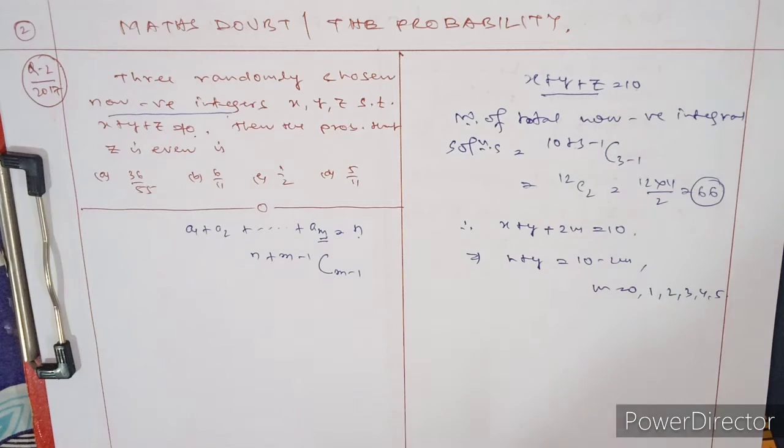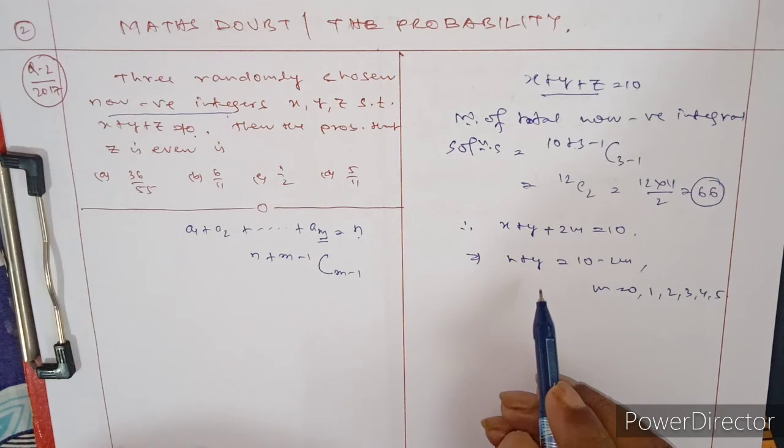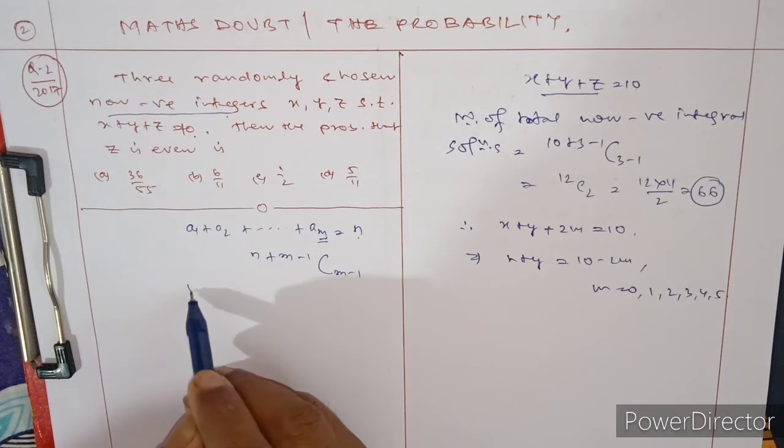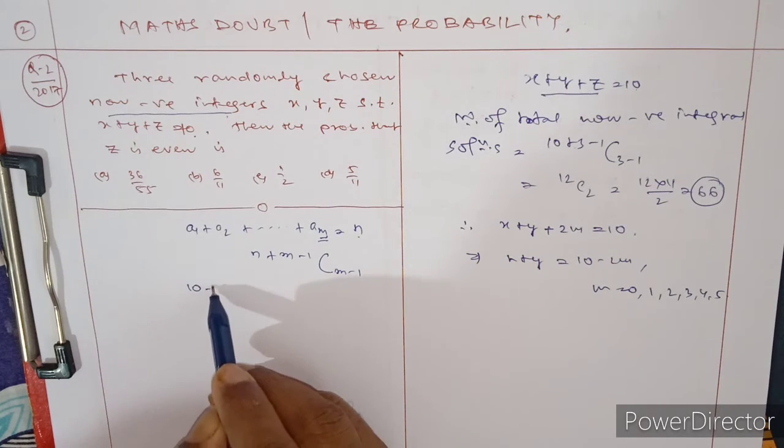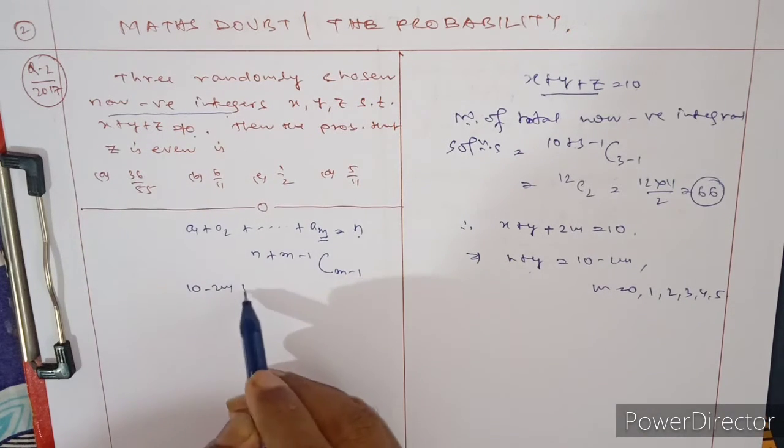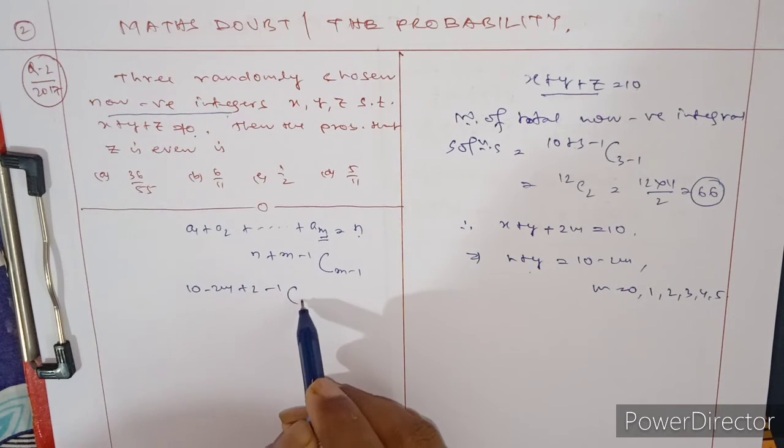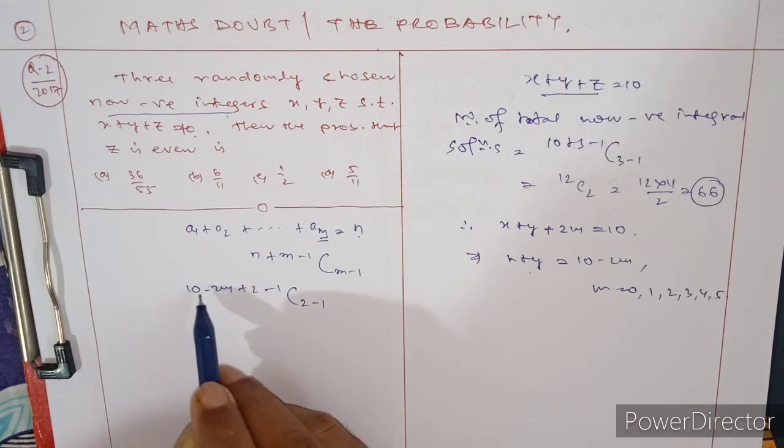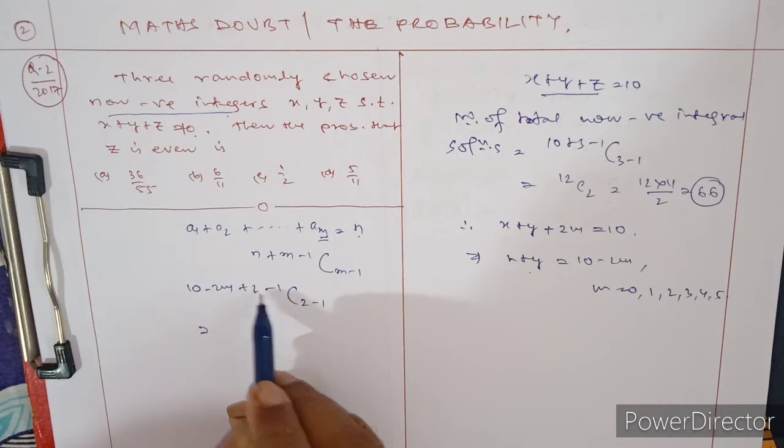For non-negative integral solutions, that is 10 - 2m + 2 - 1, C of 2 - 1, which simplifies to 11 - 2m, C1, equal to 11 - 2m.